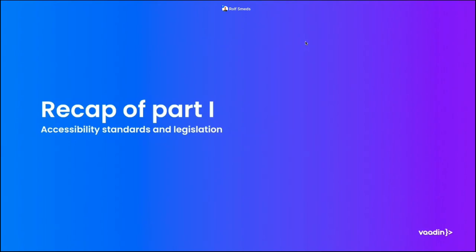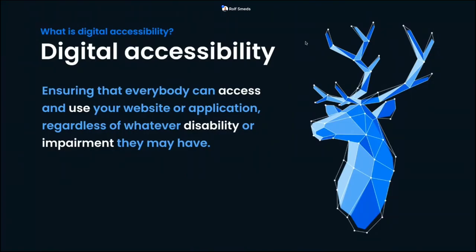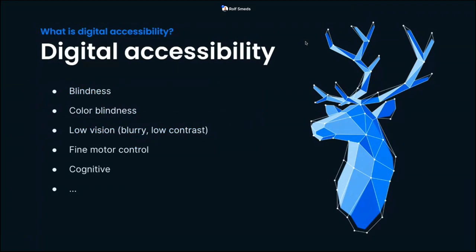Starting with the recap of part one on accessibility legislation and standards. What do we mean by digital accessibility? At its core, it's about ensuring that everybody can access and use your web applications, websites, mobile apps and so on, regardless of whatever disabilities or impairments they may have — for example, blindness, color blindness, low vision, issues with fine motor control, cognitive issues, and other things.